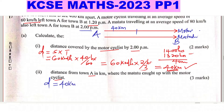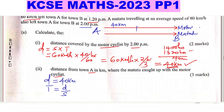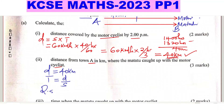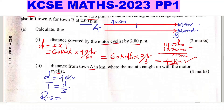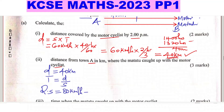We need to find the time taken to catch up, using time = distance ÷ speed. The distance between them is 40 kilometers. Since they are traveling in the same direction, we get the relative speed by taking the difference of their speeds: 80 km/h (matatu) minus 60 km/h (motorcyclist) = 20 km/h relative speed.